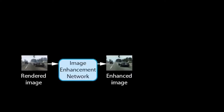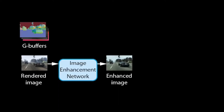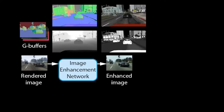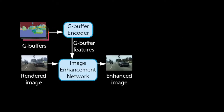Our method takes a rendered image from the game and passes it through an image enhancement network to produce an enhanced image. We further extract a set of rendering buffers, called G-buffers, produced by the game engine. G-buffers contain geometric information such as surface normals or distance to the camera, material information such as albedo or glossiness, and may also contain information about the lighting in a scene. We pass the buffers through a G-buffer encoder network to produce feature tensors at multiple scales, which encode information about the rendered scene.